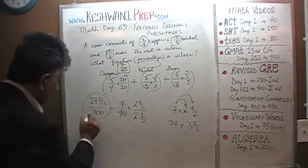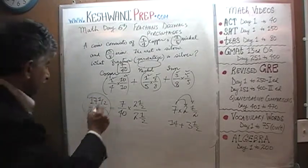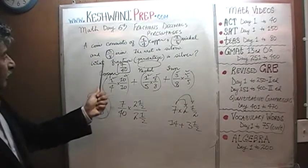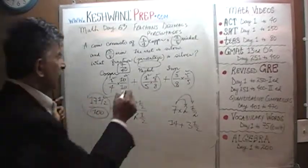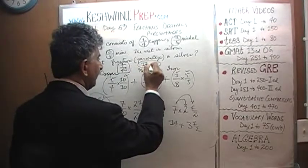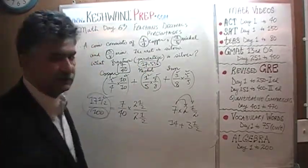17.5 over 100. Since now we have the bottom to be 100, the top is the percentage. The question was: what percentage is silver? The answer is silver is 17.5%.